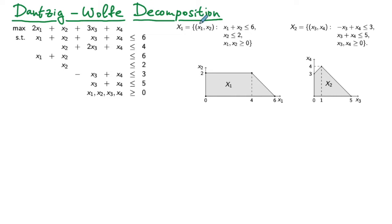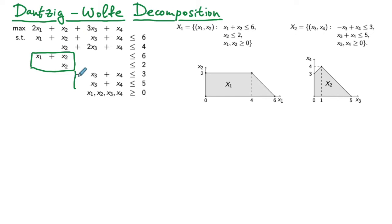We consider an example of using Dantzig-Wolfe decomposition for solving a problem with block diagonal structure. We have a maximization LP with four variables and six constraints, plus non-negativity. The first two constraints involve most variables — the first involves all four, the second involves three. The next two pairs of constraints have block diagonal structure: two constraints involve only x1 and x2, and two more involve x3 and x4.